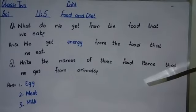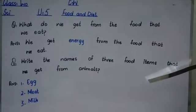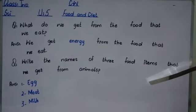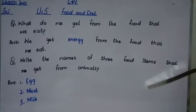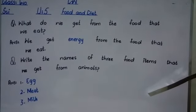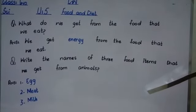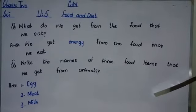Second: meat — we get meat from cows and goats. Third: milk — we get milk from cows.